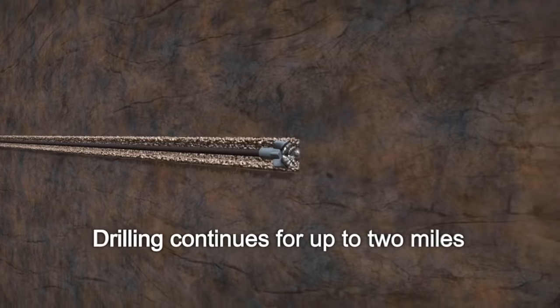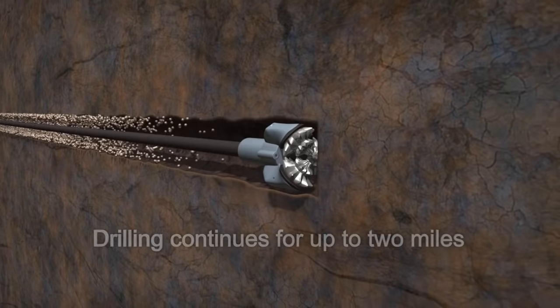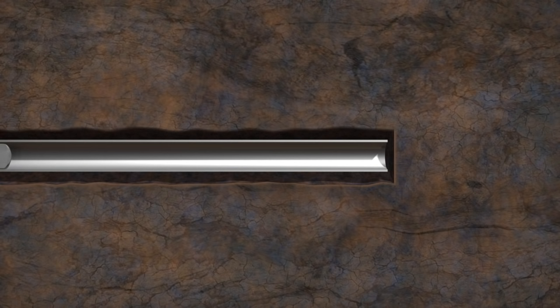Once total depth is reached, more protective casing is inserted. That casing is also cemented into place, creating an additional protective barrier through the entire length of the well. This protects both the environment and the well.